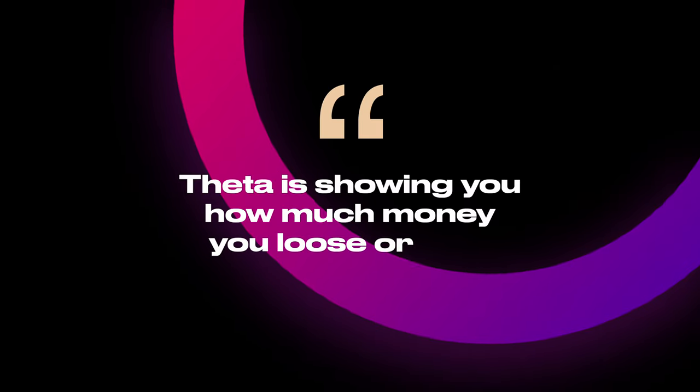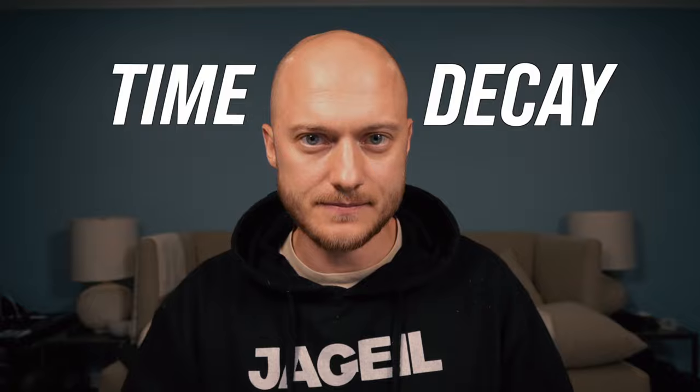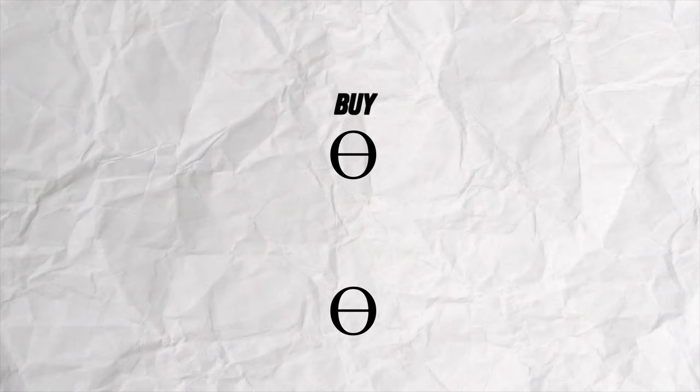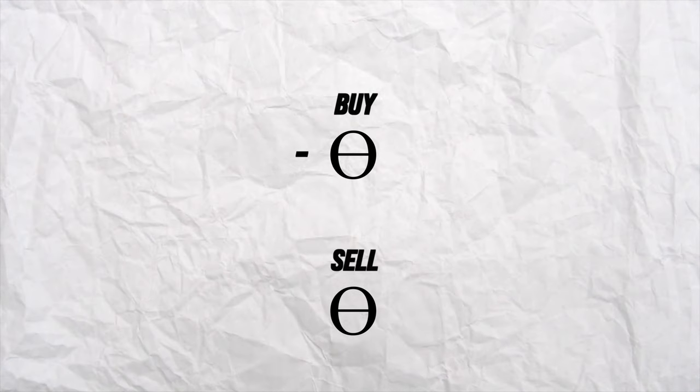Moving on to Theta. Theta shows you how much money you lose or gain per day — it's basically showing you time decay. If you buy an option, theta will be negative. But if you sell an option, your theta is positive. In my example, I purchased a LEAPS option on Apple, which means my theta is negative and my contract value decreases by $3 each day. If Apple trades sideways for a week, theoretically I would lose $21 due to time decay.